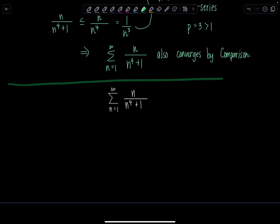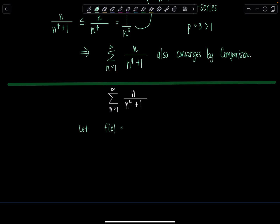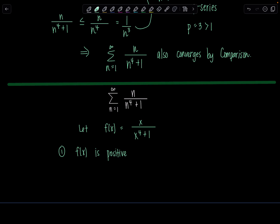We're going to go ahead and use the integral test. When we do that, remember we let f of x equal — and then we just rewrite a-sub-n as a function of x — so it's going to be x over x to the fourth plus one. There are three conditions we need to check before applying the integral test. The first is we need to show that f of x is positive — not for all real numbers, but positive for values of x matching where the index of summation is.